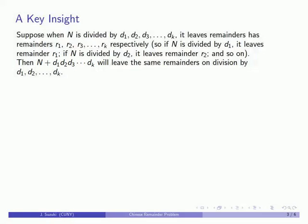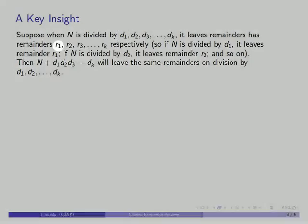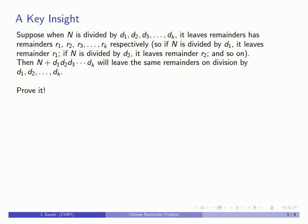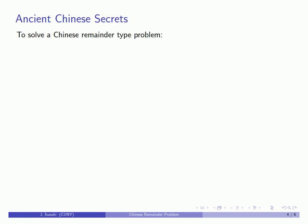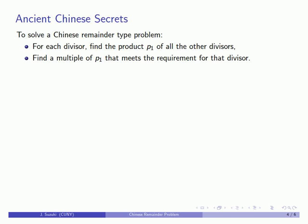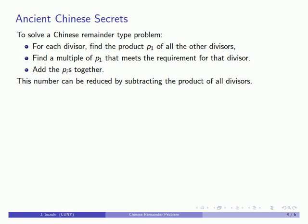So if I take this new number and divide it by d1, I'm going to get the same remainder r1. You should prove this. This leads to the following method of solving Chinese remainder type problems. For each divisor, I'm going to find the product of all the other divisors, then take a multiple of this product that meets the requirements — that is, a multiple having the required remainder for that divisor. I do this for each divisor, then add all these products together. Once I get this number, I might be able to reduce it by subtracting the product of all of the divisors.